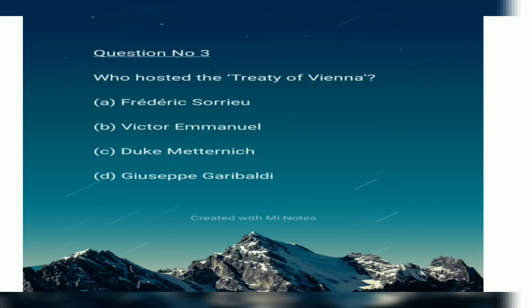Question No. 3. Who hosted the Treaty of Vienna? Option A: Frederick Sorrow. Option B: Victor Emmanuel. Option C: Duke Metternich. Option D: Giuseppe Garibaldi.